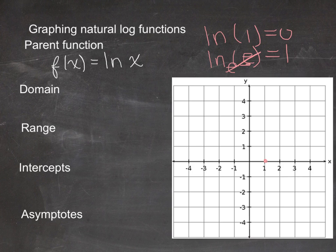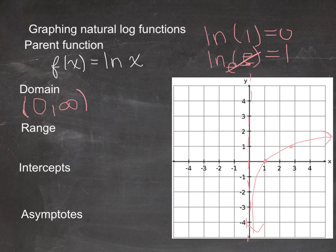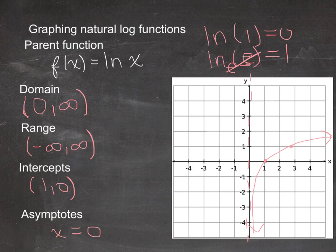Just like log base 2 of 2 equals 1, ln(e) equals 1, so when x is about 2.7, y equals 1. We can't take the natural log of any negative number or zero, so there's an asymptote at x = 0, and the graph has that same basic logarithmic shape. The domain is from 0 to infinity (not including 0), the range is negative infinity to infinity, and the x-intercept is at (1, 0) with an asymptote at x = 0. Everything is the same as a regular logarithmic function, just using base e.